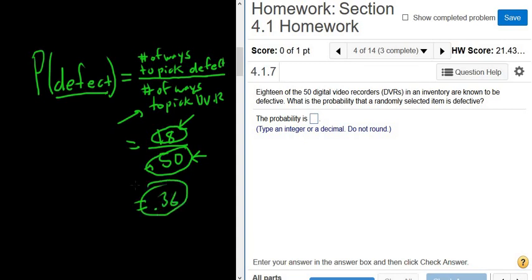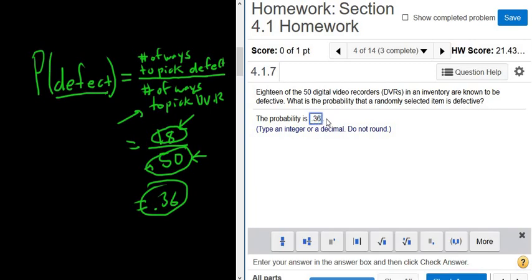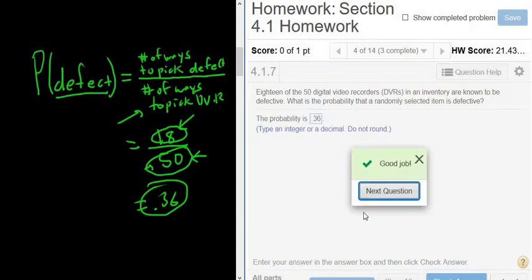So there's a 36% chance that we pick a defect. That's pretty high - a pretty bad batch of DVRs. And that's it, I hope that made sense.